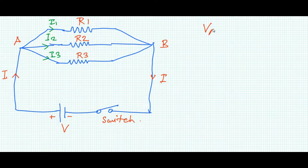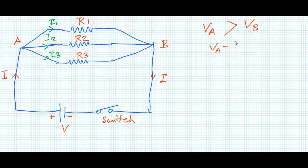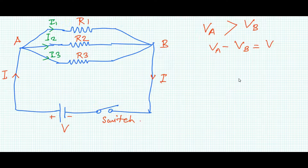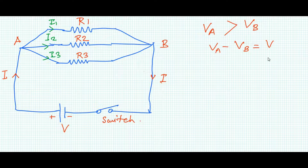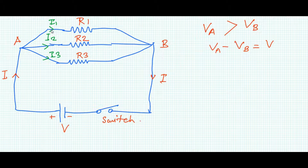In parallel combination, the key point to note is that the potential difference between point A and B is the same across all three resistors. Va is at greater potential than Vb. The current is different for all three resistors — current magnitude depends on the value of resistance.